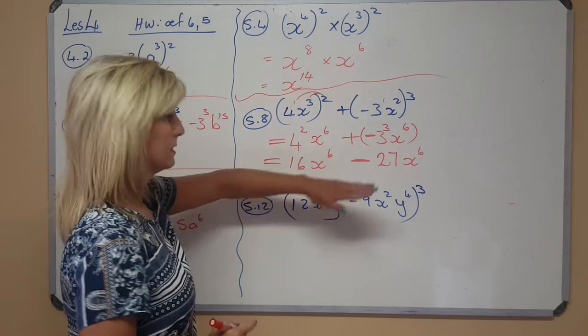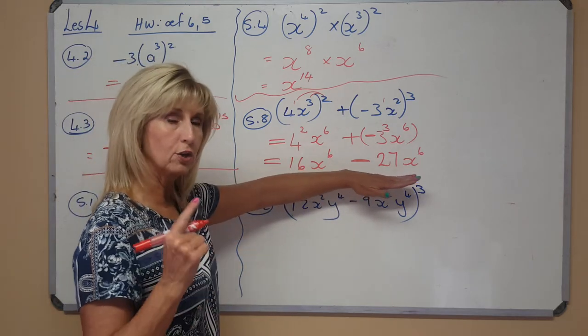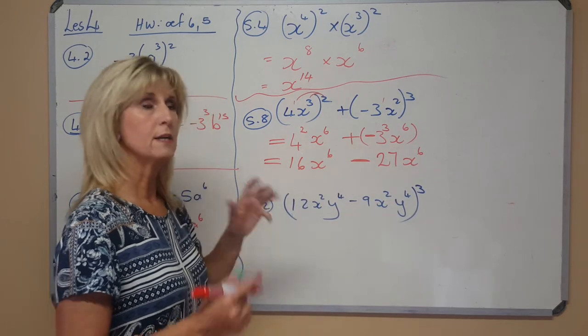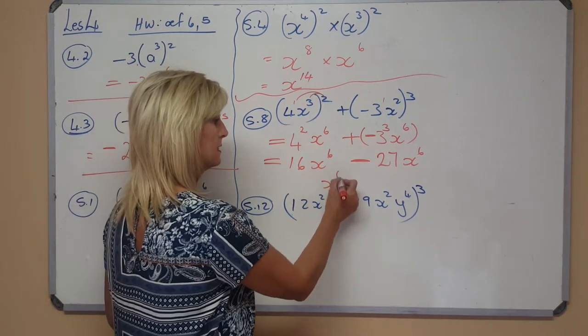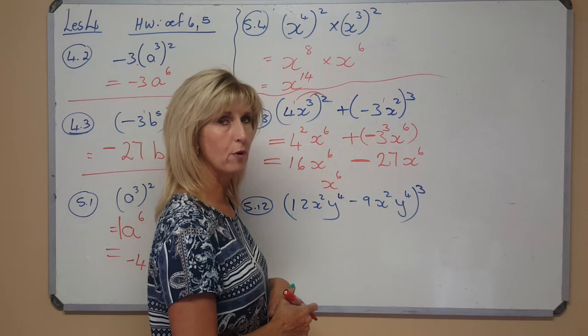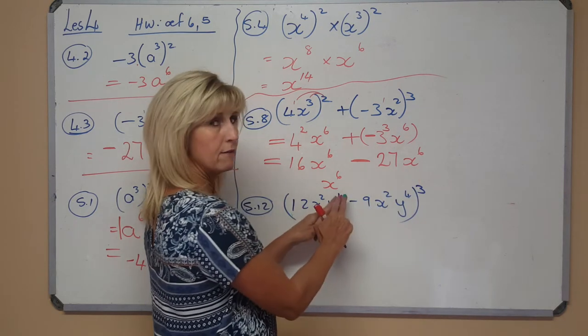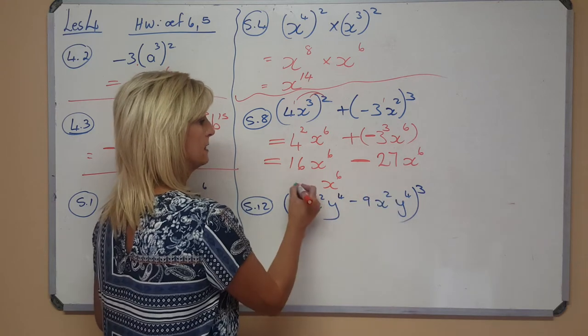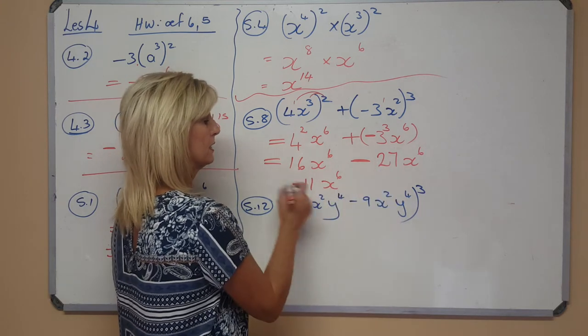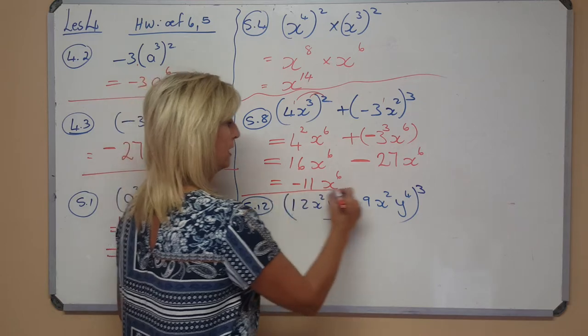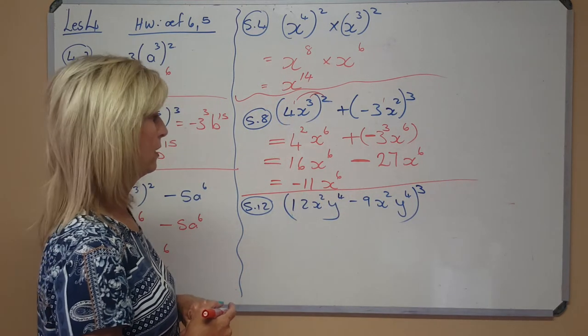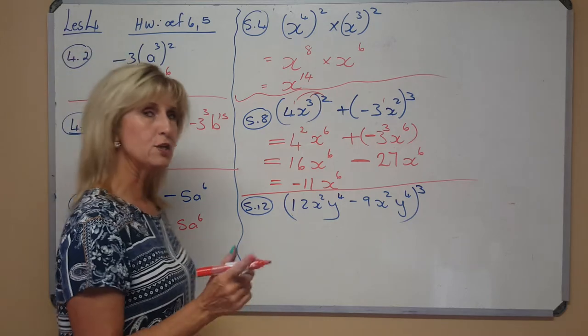No, it's not. That is not the answer because look how it looks there. They are like terms. So I keep the variable x to the 6 and I add the coefficients. So I keep the variable and I add the coefficients. 16 minus 27 is minus 11, x to the power 6. How are you doing? Going well. Alright, for the next one.